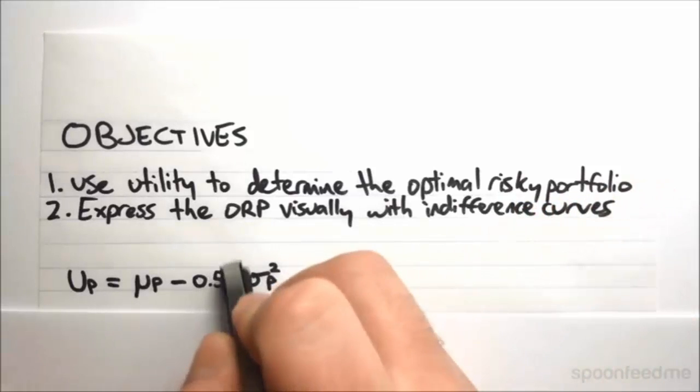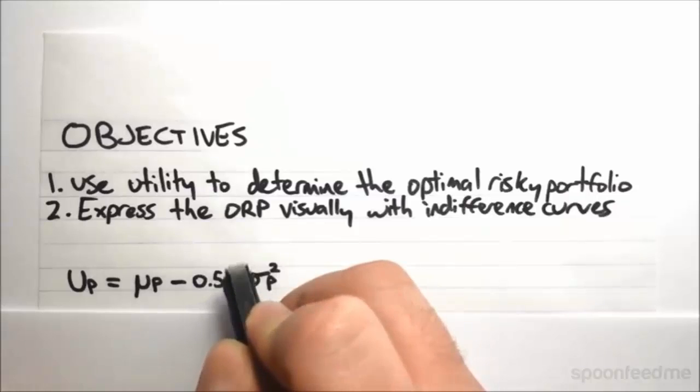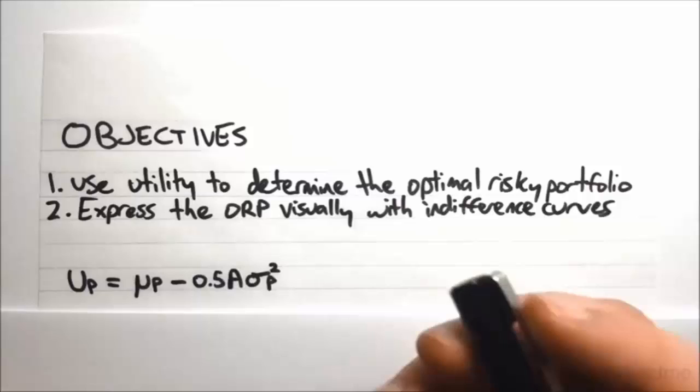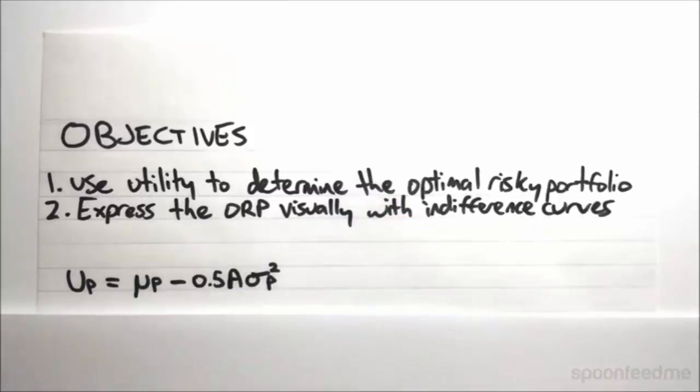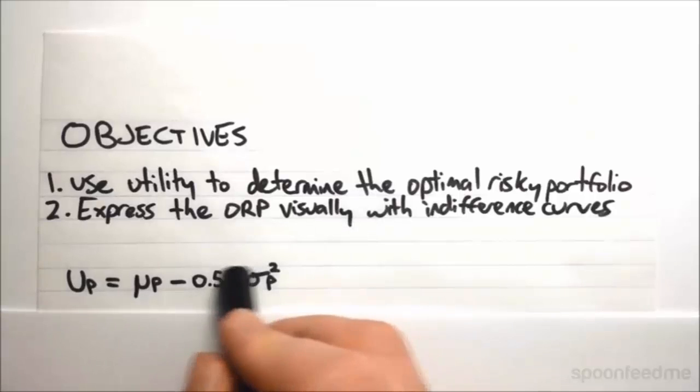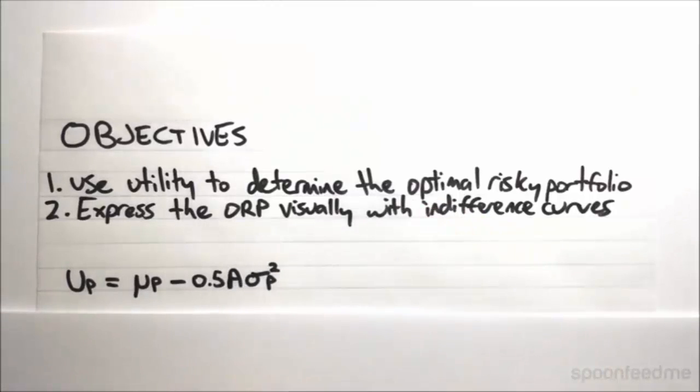So what is this A term? This A is what we call the degree of risk aversion. And it's pretty simple, it basically just tells you how much you hate risk. The idea is that everybody hates risk. Or maybe some people don't, if they don't they would actually have a negative A, but that would be rather bizarre.